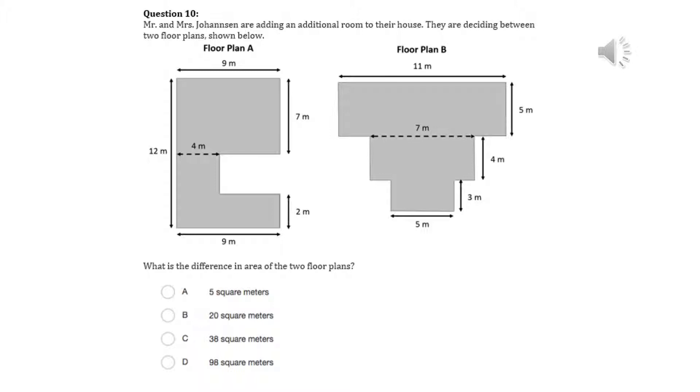Question 10. Mr. and Mrs. Johansson are adding an additional room to their house. They are deciding between two floor plans shown below. What is the difference in area of the two floor plans?